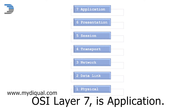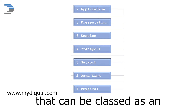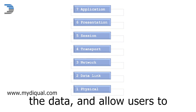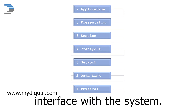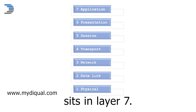OSI layer 7 is application. This is anything in the system that can be classed as an application — these are the programs that process the data and allow users to interface with the system. For example, a web browser sits in layer 7.